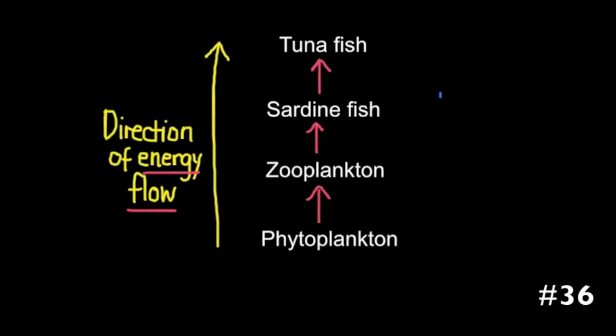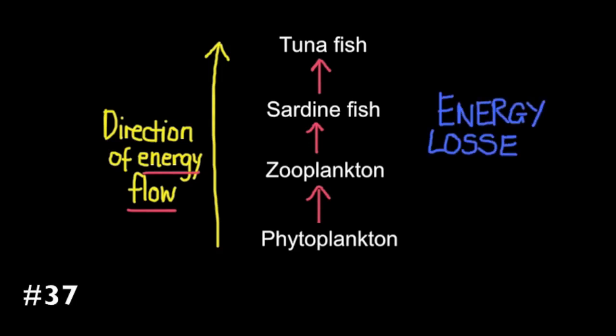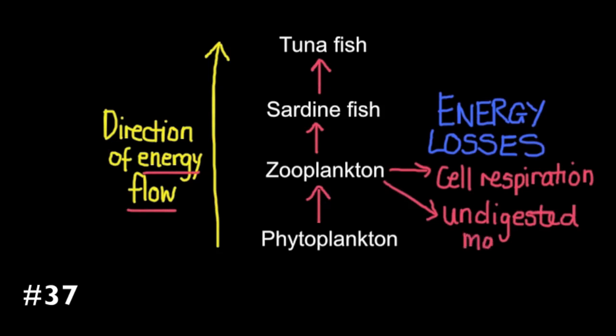When drawing food chains or food webs for that matter, there are two really important things to remember. The first is to make sure that your arrows point in the direction of energy flow. They cannot point in both directions, only in the direction of energy flow. The second is to be familiar with the ways in which energy is lost at each trophic level. Energy is lost through cell respiration, through undigested material or feces, and also through the death of organisms.